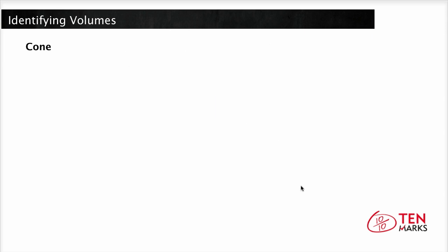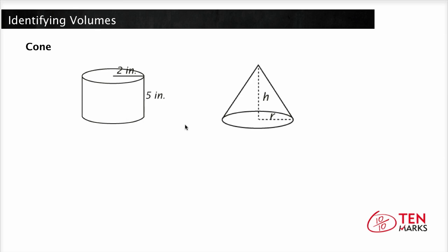Now let's look at the volume of a cone. A cone is very similar to a cylinder in that it has a circle for a base. The difference is that a cone comes to a point at the top. The base area continually gets smaller as the height increases, so you can't use the formula volume equals base area times height.